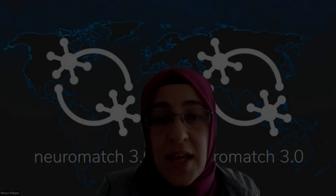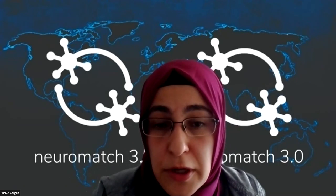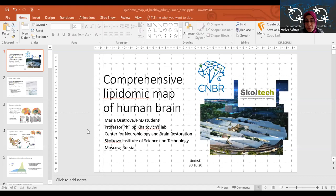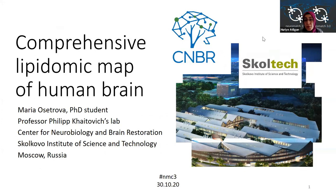And now we will move to our final speakers. Maria Osetrova is from Russia. She's a graduate student in the Center for Neurobiology and Brain Restoration at Skoltech in Moscow. She's doing her thesis work in the laboratory of Professor Philip Khaitovich. Their lab is focused on metabolic and structural organizations of the human brain from an evolutionary point of view, as well as in the context of mental illnesses. Today Maria will talk about the lipid compositions of the healthy adult human brain, titled 'Comprehensive Map of Human Brain Lipidome.'